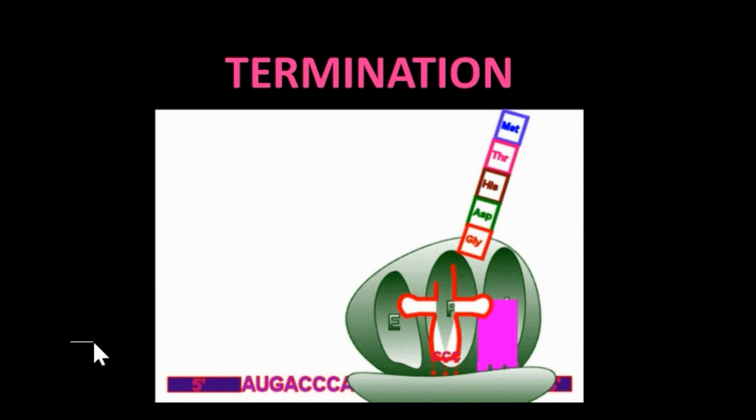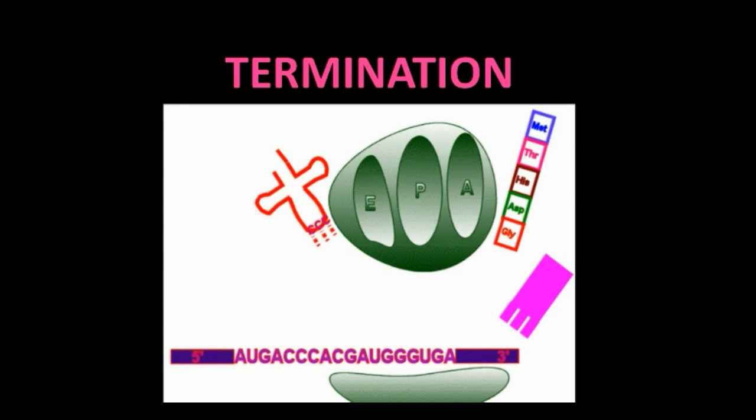So, what happens is the polypeptide chain is released by the tRNA, and then, finally, the entire giant process releases on its own. So, the release factor causes the separation of the polypeptide chain and all of the sort of translation machinery. So, they all go their separate ways.